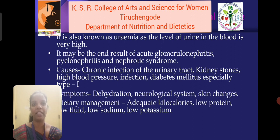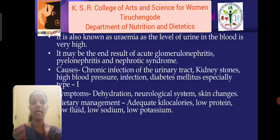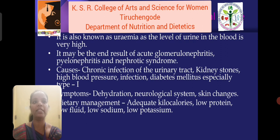Chronic renal failure is also known as uremia as the level of urea in the blood is very high. It may be the end result of acute glomerulonephritis, pyelonephritis, and nephrotic syndrome. Causes include chronic infection of the urinary tract, kidney stones, high blood pressure, infection, and diabetes mellitus especially type 1. Symptoms like dehydration, neurological symptoms, and skin changes are observed. Dietary management: adequate calories, low protein, low fluid, low sodium, and low potassium should be strictly followed.